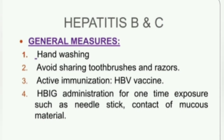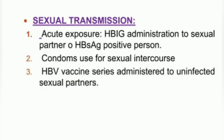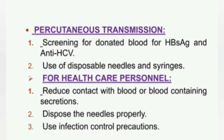Prevention for Hepatitis B and C includes general measures: handwashing, avoid sharing toothbrushes and razors. Active immunization with HBV vaccine is recommended. HBIg administration is indicated for one-time exposure such as needle sticks, or contact of mucous membranes with affected material. For sexual transmission, HBIg and HBV vaccine series should be administered to the sexual partner of HBsAg-positive persons, along with condom use. Precautionary measures include screening donated blood for HBsAg and HCV, use of disposable needles and syringes, reducing contact with blood or blood-containing secretions, and proper needle disposal.